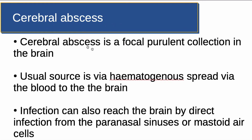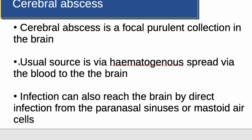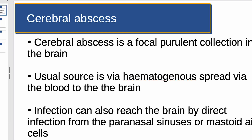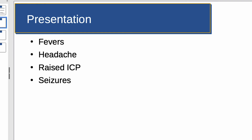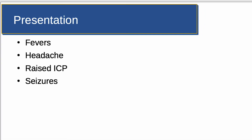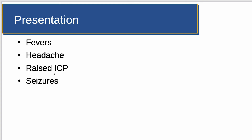Cerebral abscesses are a focal purulent collection within the brain. The usual source is via hematogenous spread via the blood to the brain. Infection can also reach the brain by direct spread from the paranasal sinuses or the mastoid air cells. Patients with cerebral abscesses present with fevers, headache, raised intracranial pressure, seizures, or other focal neurology.